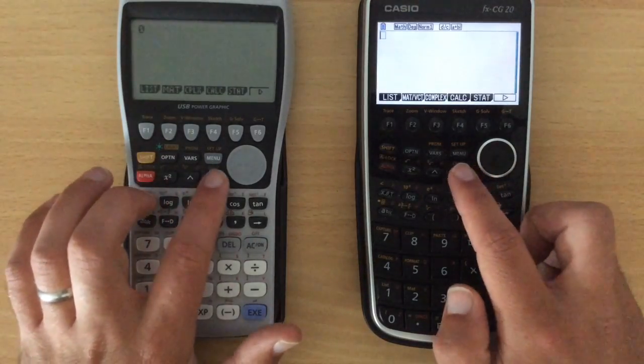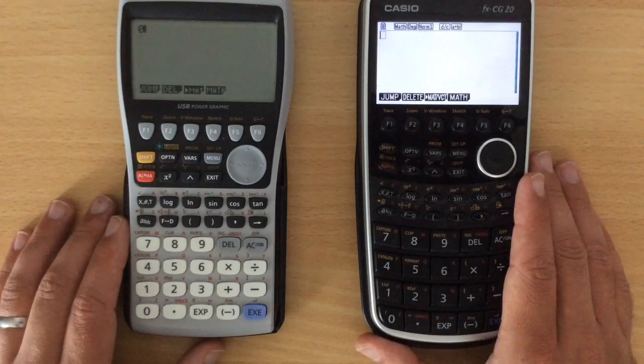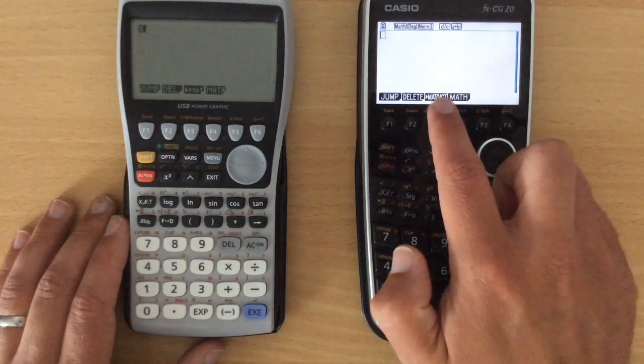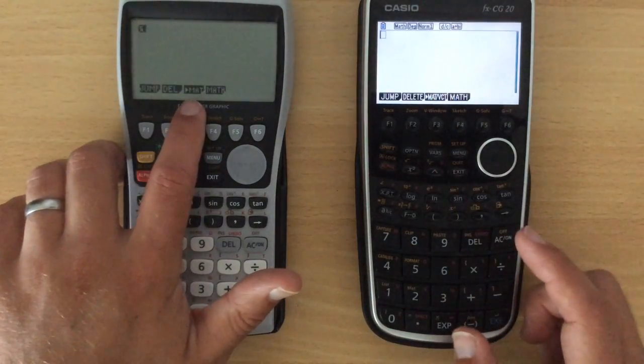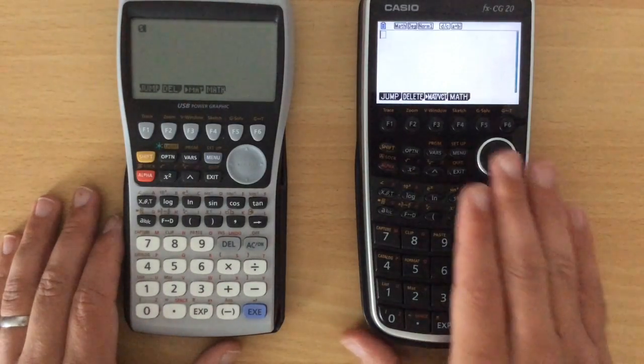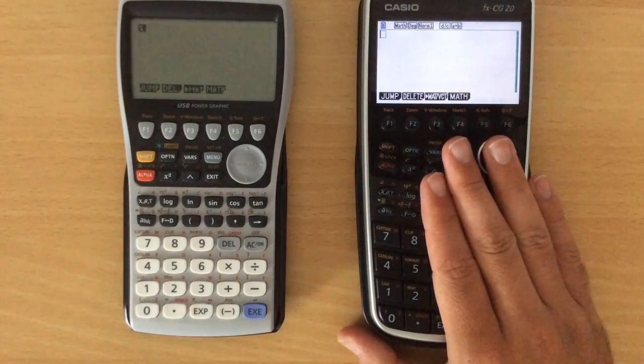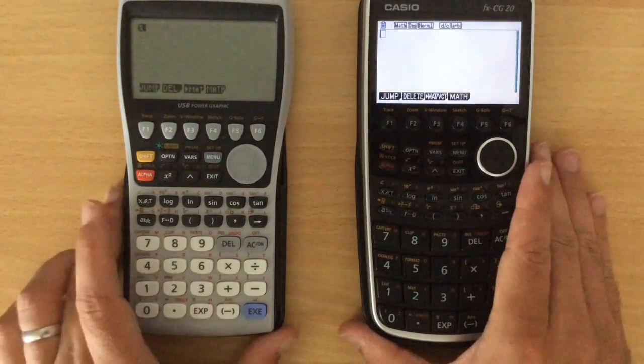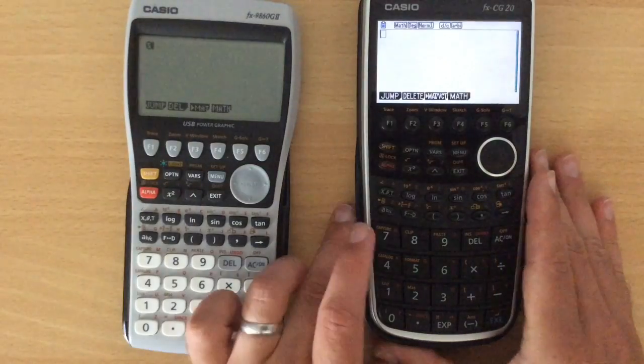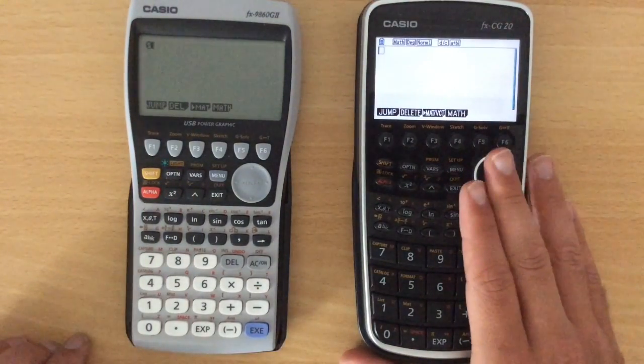But essentially, when you're doing your standard calculations, these are the same, with one slight difference that this will actually do vector calculations, whereas this one will only do matrix calculations. So it's the same sort of thing. The CG20 will also do 3D graphs, although that requires a software add-in. Just download a little patch and stick it in, so it's not a major difference.